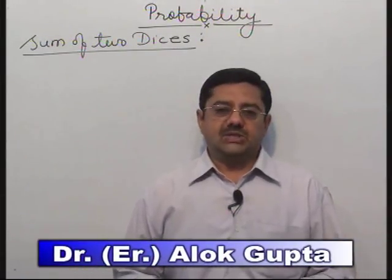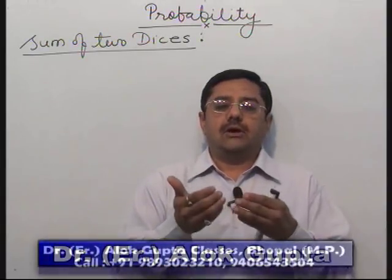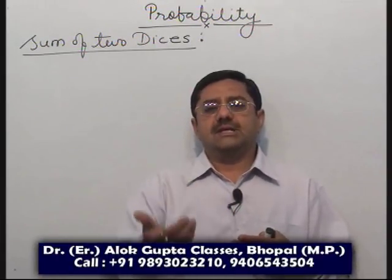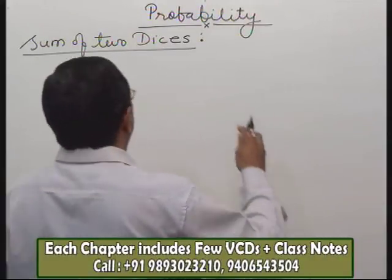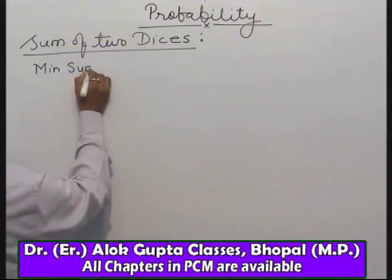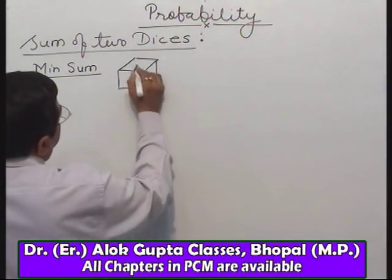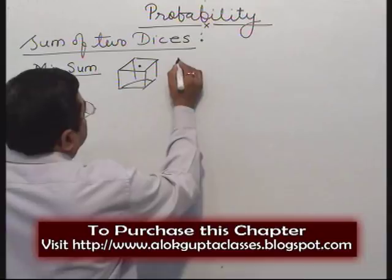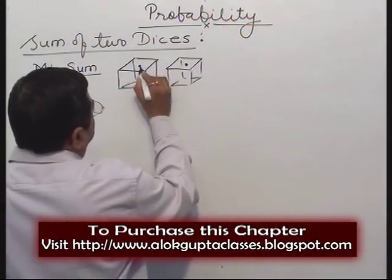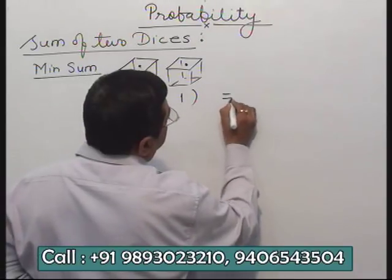Now, come to the sum of two dice. Two dice are rolled. What is the probability of getting a sum of 2, 3, 4, 5, 6 and so on? If two dice are thrown, what is the minimum possible sum? The minimum number on the first die is 1 and on the second die it is also 1. If minimum number is 1 and 1, the sum total will be 1 plus 1, which is 2.